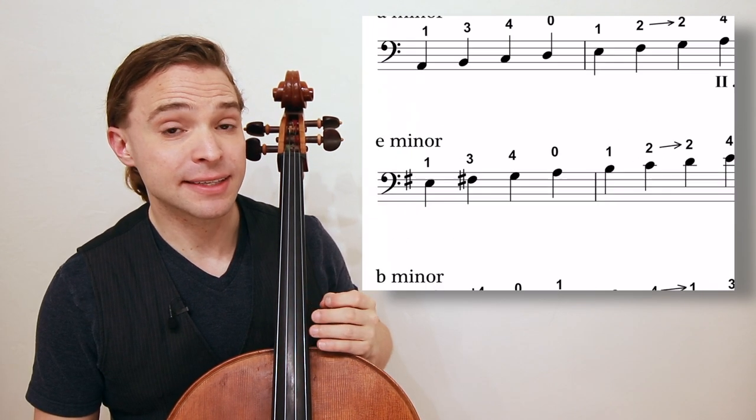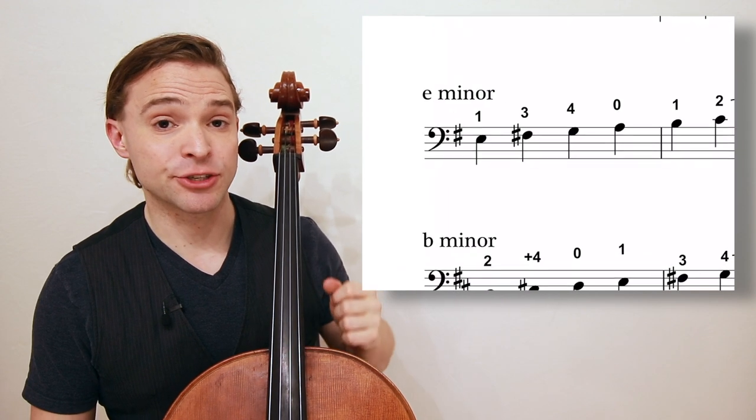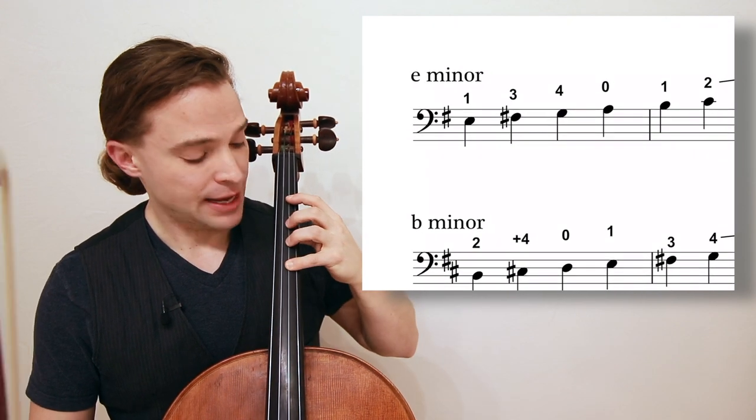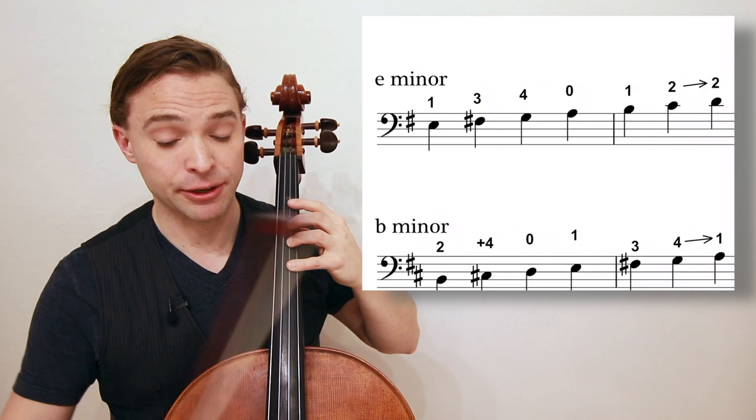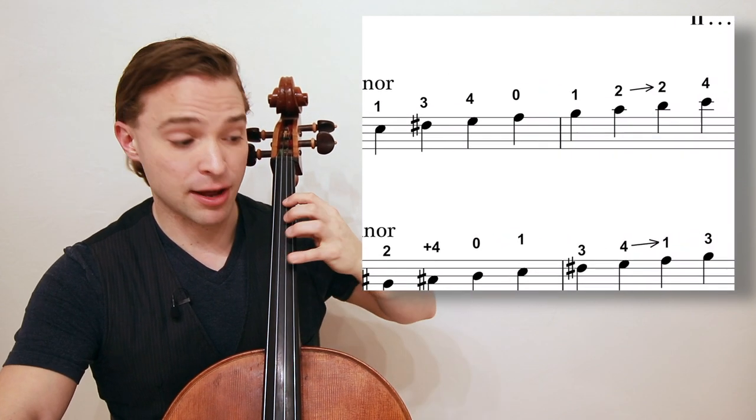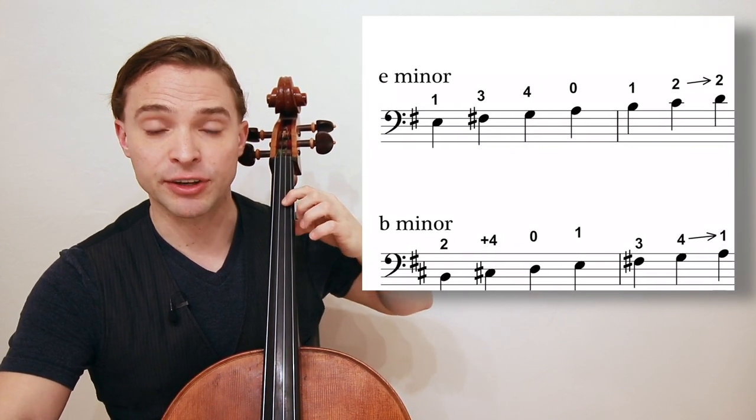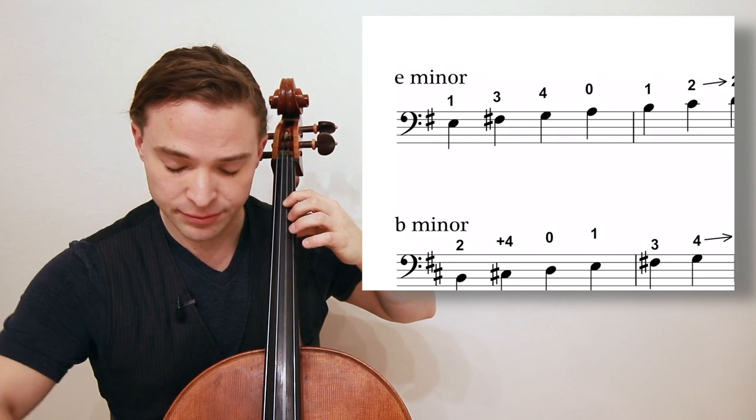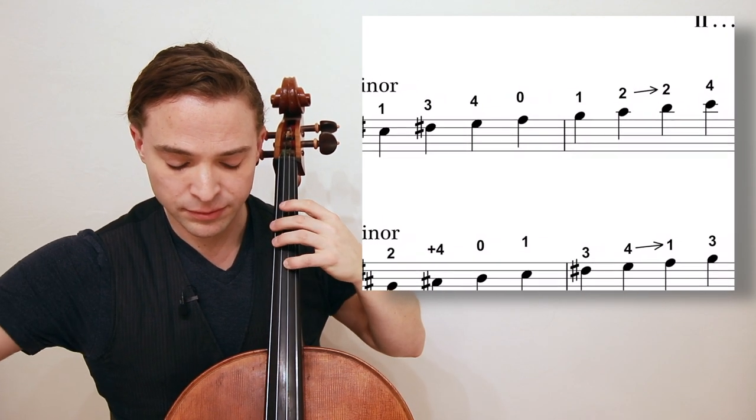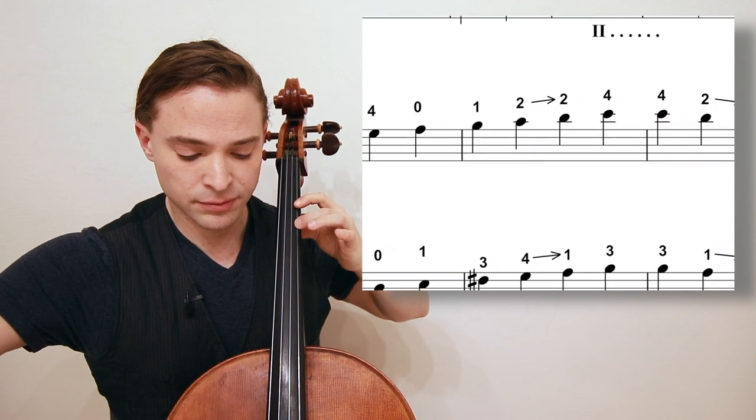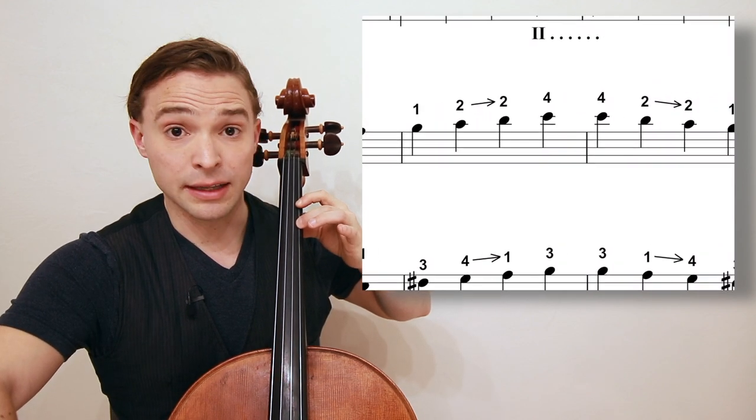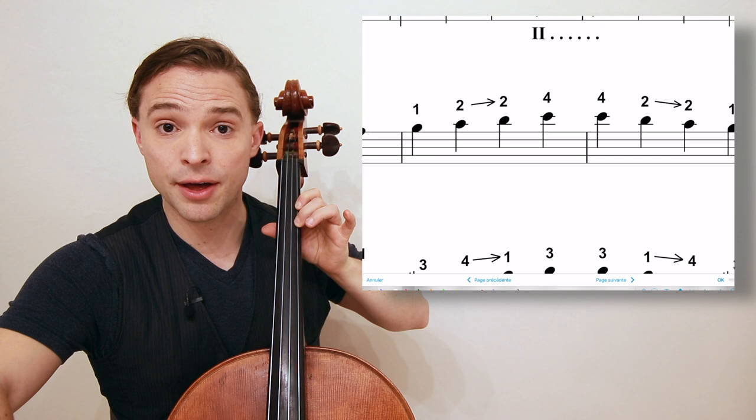E minor is the same thing. It's the same as G major, one sharp, and you will play the same exact fingerings. But here starting on the E, which is the first finger on the D string. Lead the hand with the thumb.